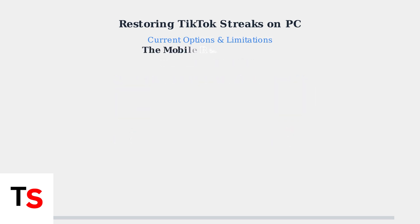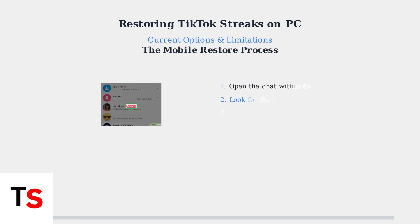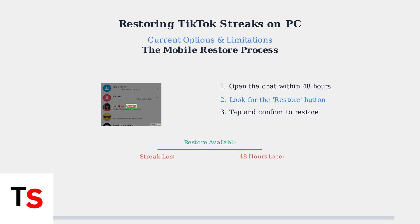If you lose a streak, you have a 48-hour window to restore it using your mobile device. Open the chat where the streak was lost and look for a Restore button. Simply tap it and confirm to bring your streak back to its previous count.